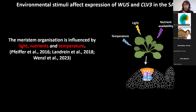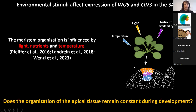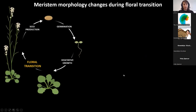In recent years, several groups became interested in understanding whether environmental stimuli could affect the organization of the shoot apical meristem. Indeed, what they found is that stimuli like temperature, light, and nutrient availability can actually affect the size and shape of the meristem via changes in the expression of CLAVATA3. When I started my postdoc, I had a very specific question: could developmental processes also affect the organization of the inner regions of the shoot apical meristem? To approach this, I decided to use floral transition as a developmental process to study how SAM organization changes during development.